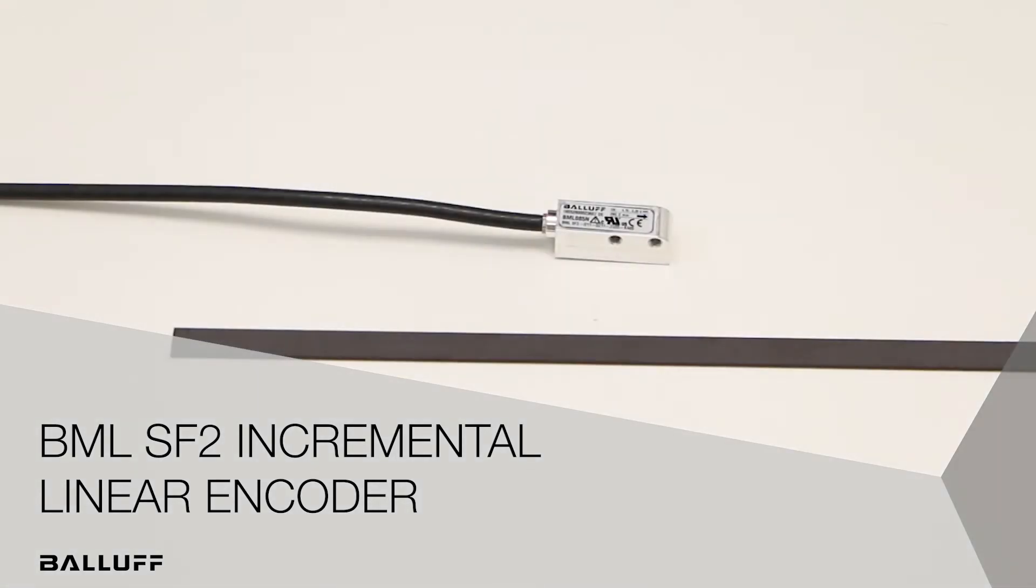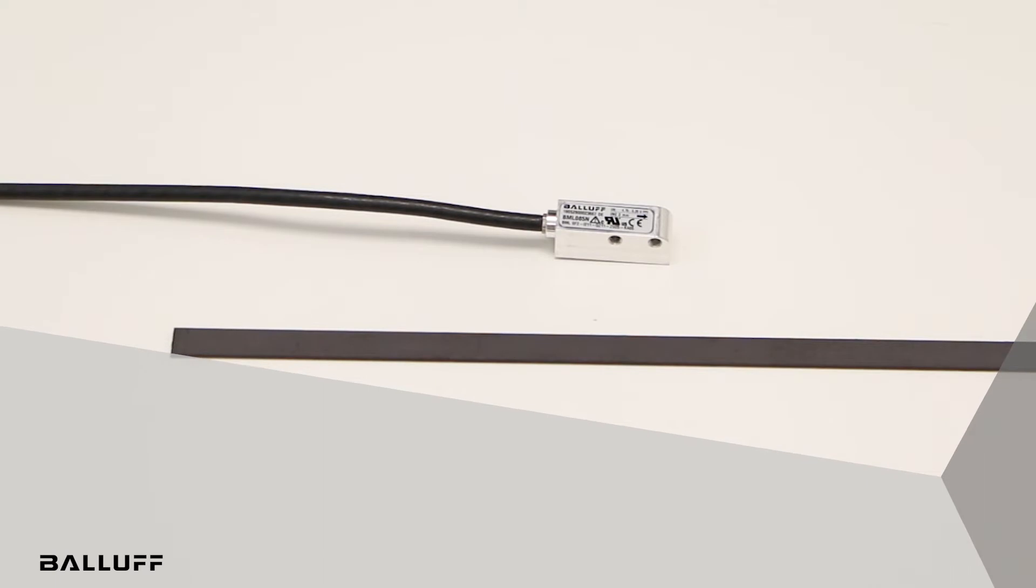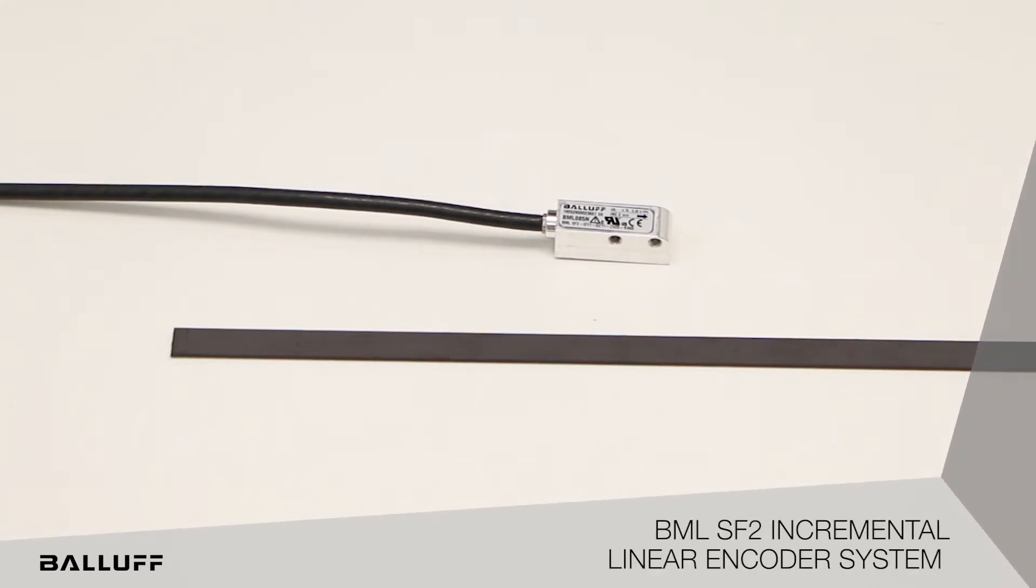This is the new BML SF2 Incremental Magnetic Linear Encoder System, which is being introduced to the market to solve installation and usage difficulties associated with tight sensor head to magnet tape gap tolerances on existing magnetic encoder systems.